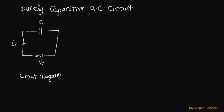In a purely capacitive AC circuit, the current leads the voltage by 90 degrees. If we draw the phasor diagram for this circuit, we have our current and our voltage, and the angle difference between the capacitive current and the capacitive voltage is 90 degrees. So in a capacitive AC circuit, the current is leading the voltage by an angle of 90 degrees.